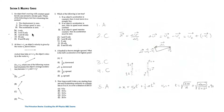Statement 3 is false because the acceleration is not zero. This is because the velocity changed — not in magnitude, but in direction. So even if its magnitude is constant, the velocity was changing direction, and so there is non-zero centripetal acceleration.